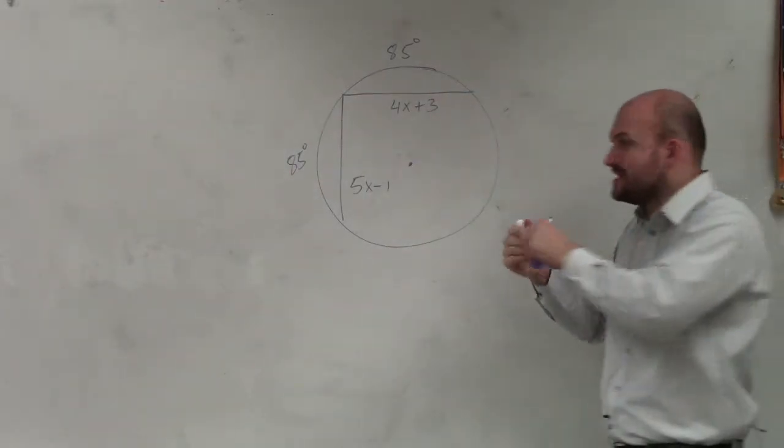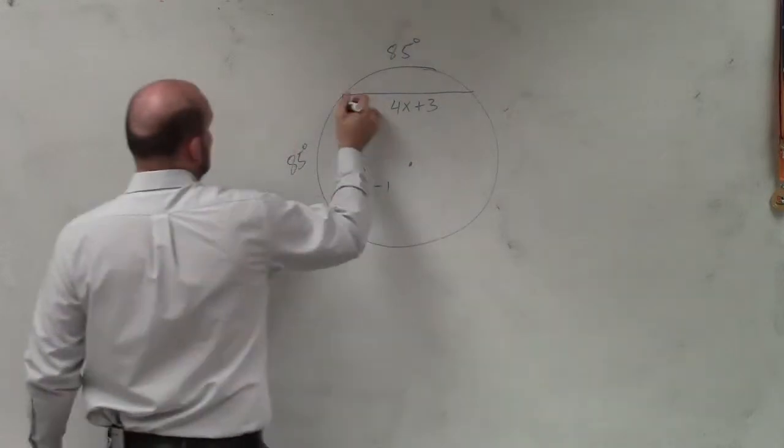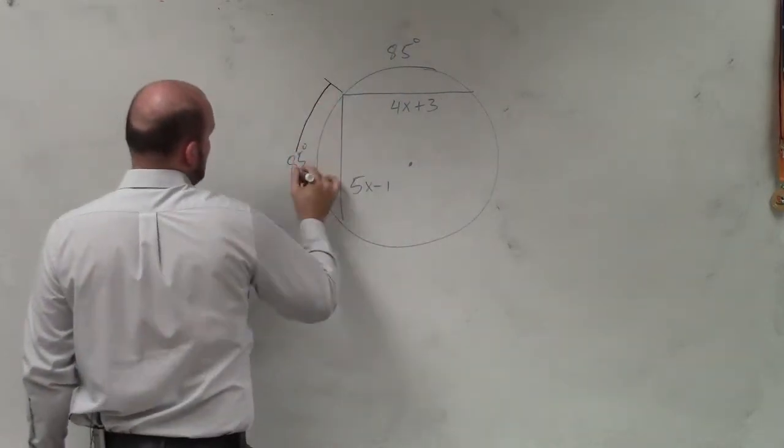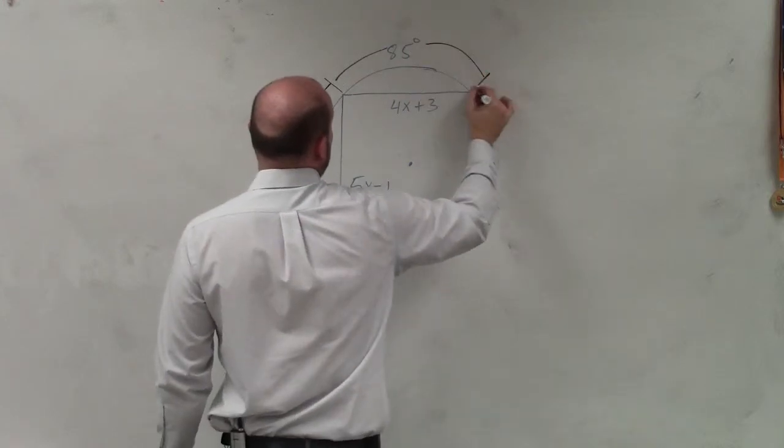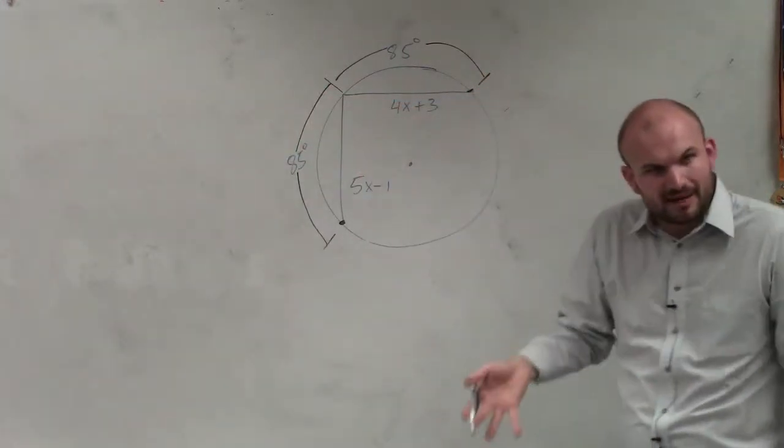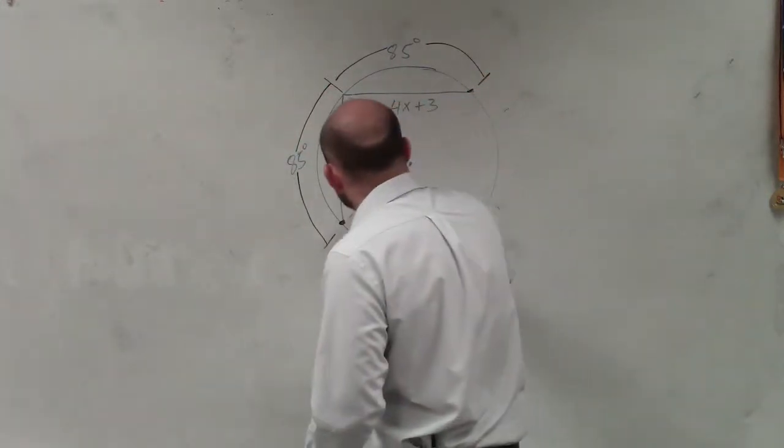Now again, what do these arcs represent? The arcs represent the distance from here to there and from here to there. That's what those arcs represent. And where do those come from? They come from that central angle.